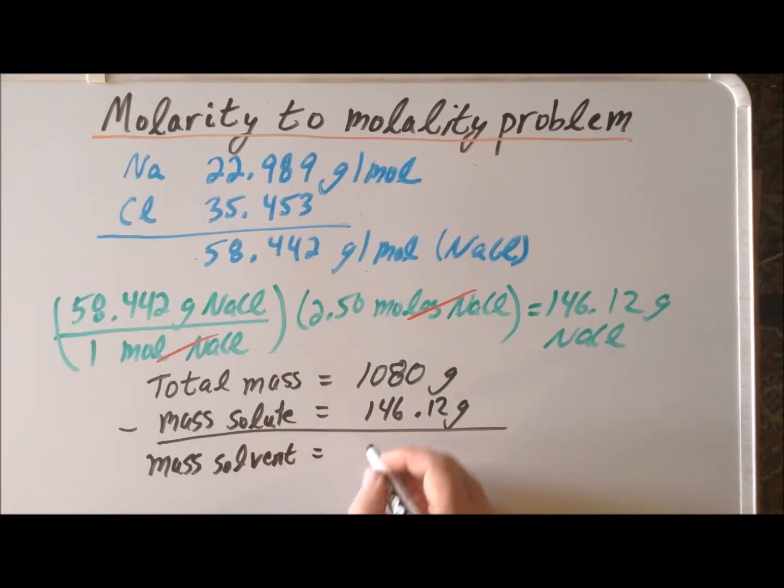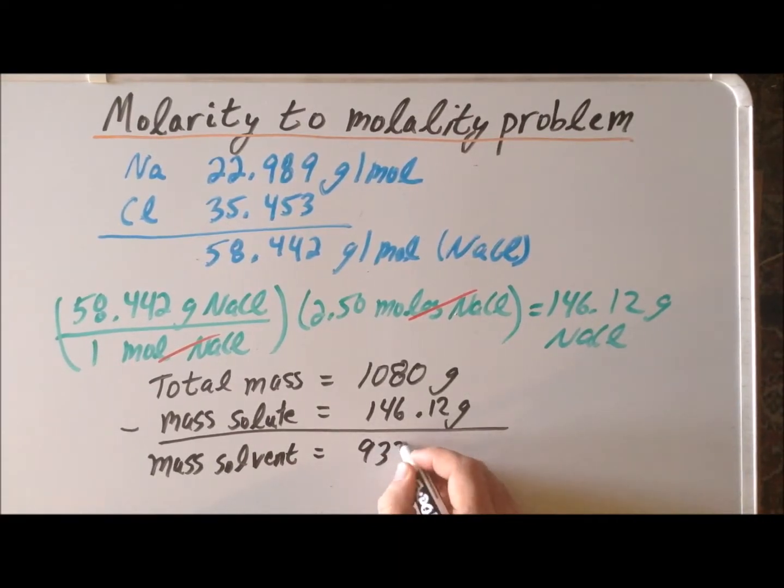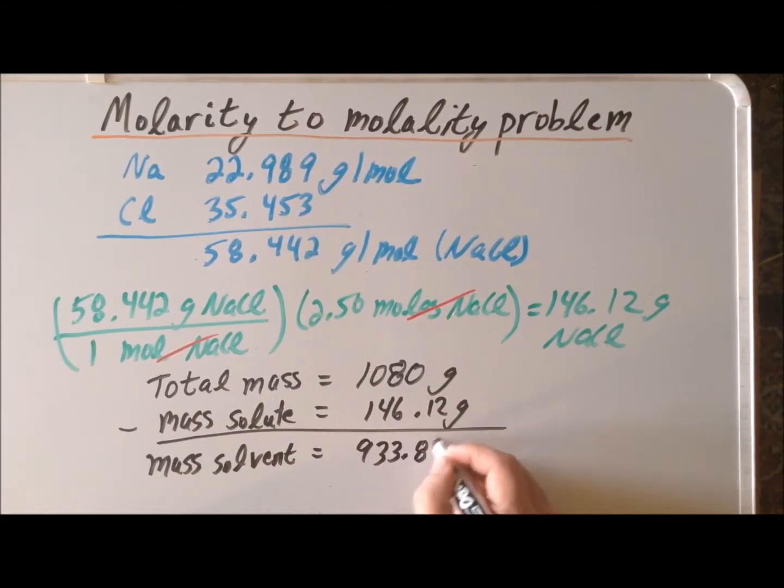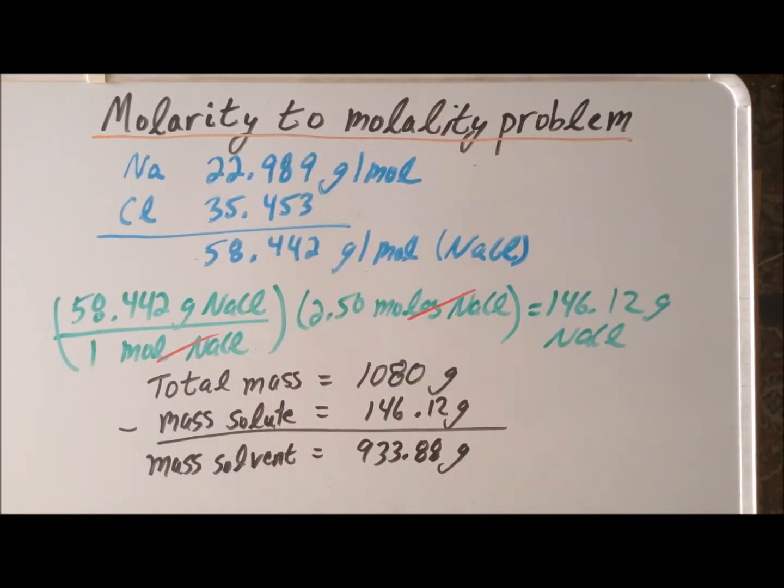And this total is 933.88 grams. Intuitively, what we use is the fact that the whole minus one of its parts gives us the other parts, or that the whole is the sum of its parts. The result is that the mass of the solvent has been determined to be 933.88 grams.